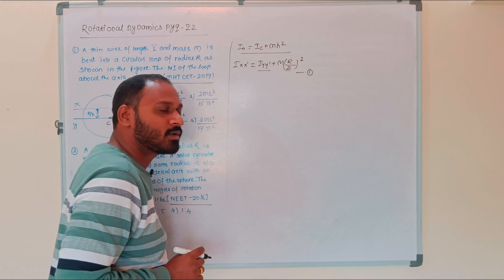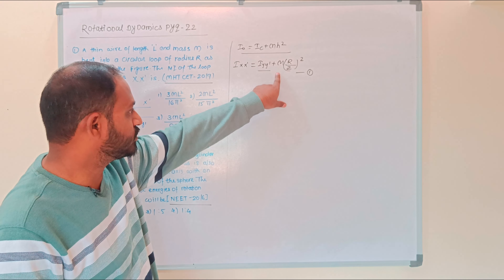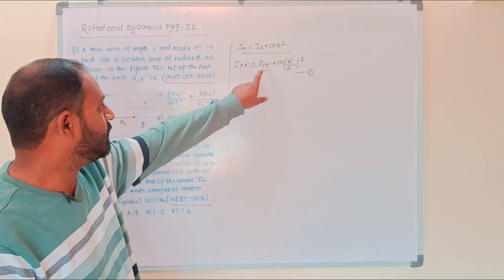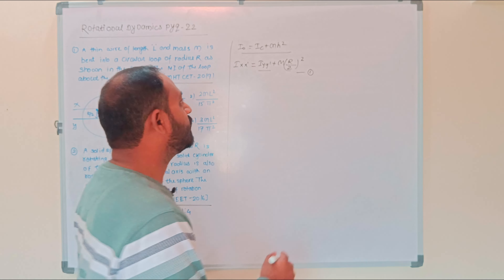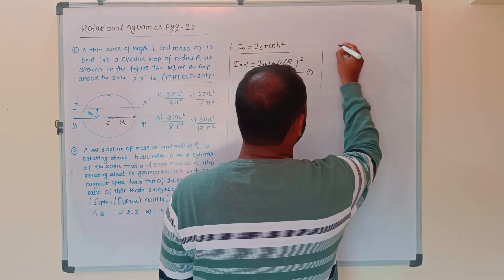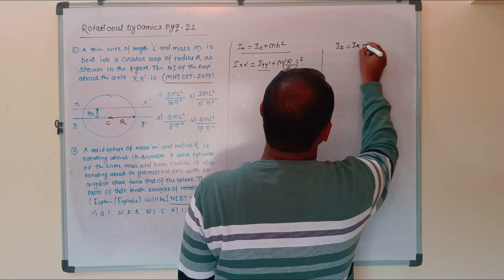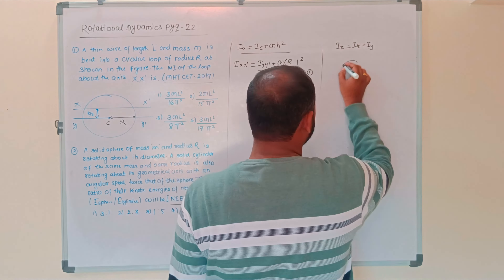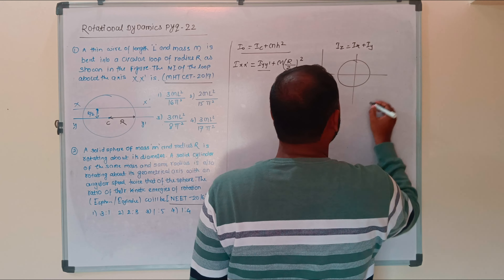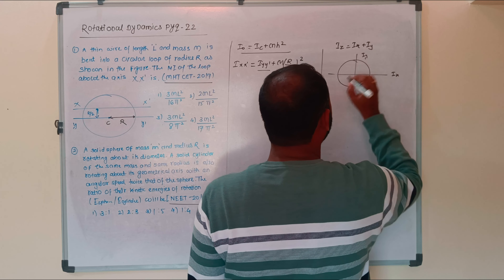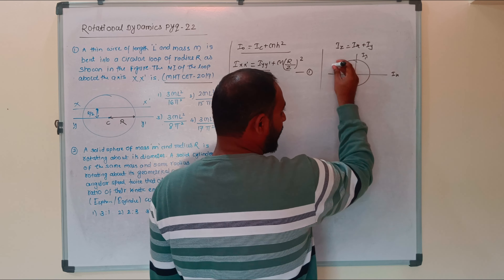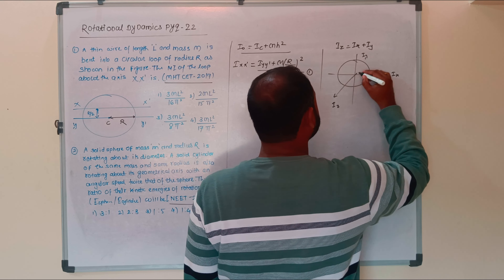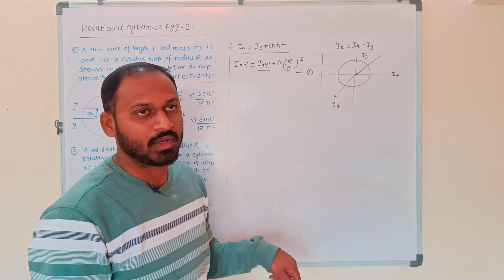To find the moment of inertia about XX prime, we need the value of the moment of inertia about YY prime. We apply the perpendicular axis theorem: I_z = I_x + I_y. The z-axis is perpendicular to the plane of the ring.